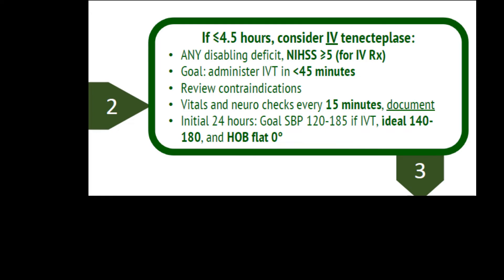If the last known normal was less than four and a half hours, the patient may qualify for IV tenecteplase. If stroke symptoms are disabling, start checking vital signs at least every 15 minutes or more frequently as needed. To give IV tenecteplase, the goal systolic blood pressure should be between 120 and 185 mmHg. Some recent publications suggest the best blood pressure range in the first 24 hours of acute stroke is between 140 and 180.